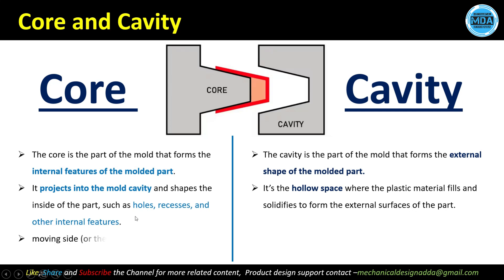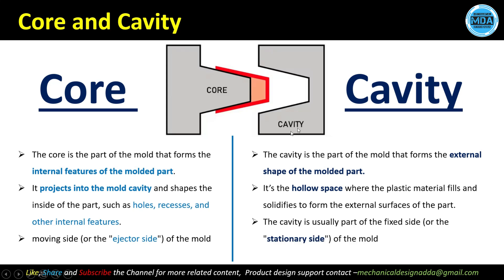The core is generally located on the ejector side, also called the moving side, and the cavity is generally located on the stationary side of the mold. There are two types of mold halves: one is fixed and the other is movable. The cavity is located at the fixed half of the mold, and the core side is located at the ejector side — meaning the core is movable.